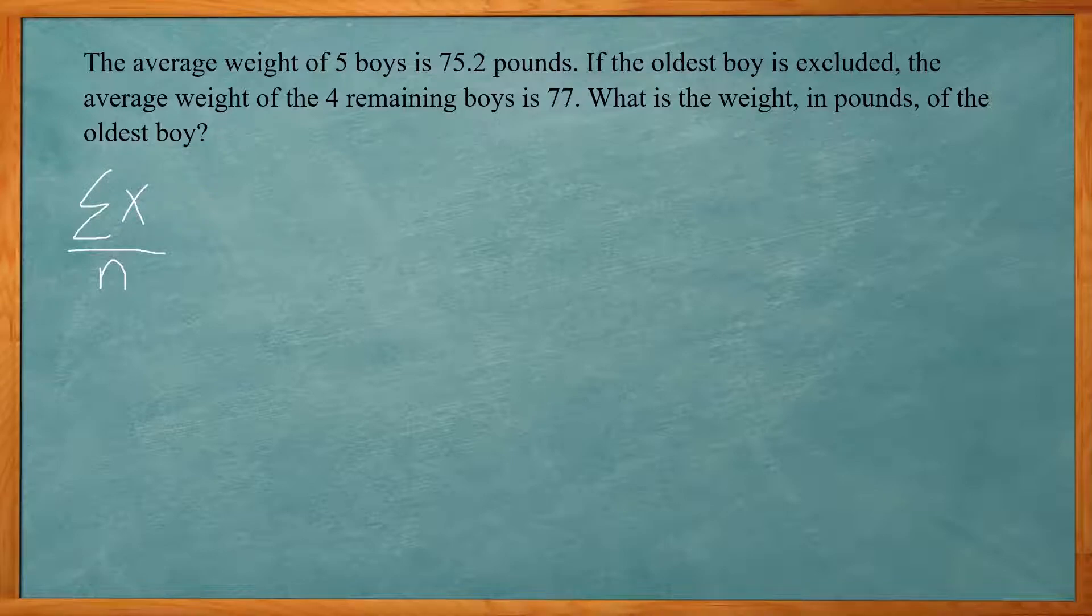So we originally start out with the average is 75.2. So you can multiply five times 75.2. That'll be our original summation of the x values. That's going to be 376. And what's the unknown? The unknown is the weight of the older boy. So if we have 376,